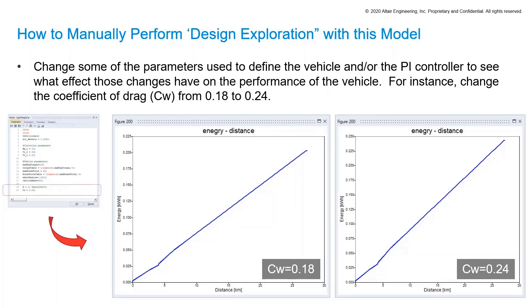This slide, I know it's a lot of text, but this slide is actually just saying that if we change a parameter, we will see changes in our scopes, in our plots. For example, in this example, we just changed the CW value, which is in English, CD value, which is the drag coefficient from 0.18 to 0.24. And we see in the plots a difference in the energy usage.